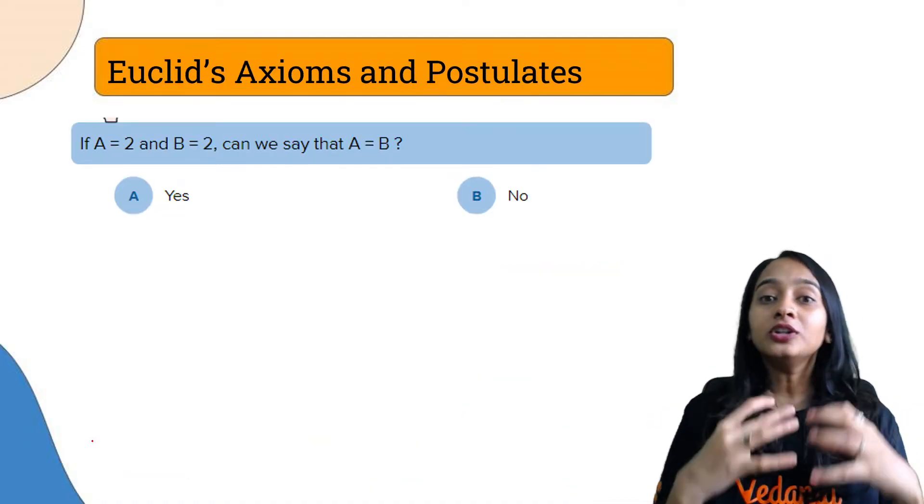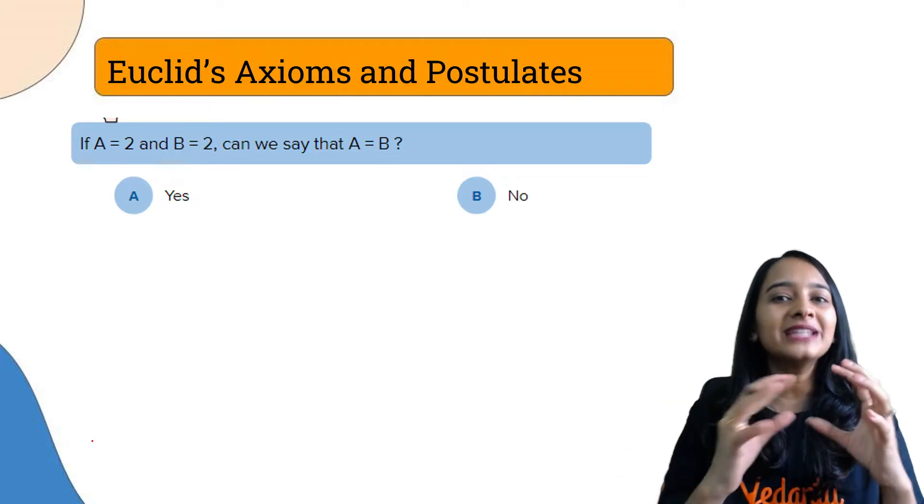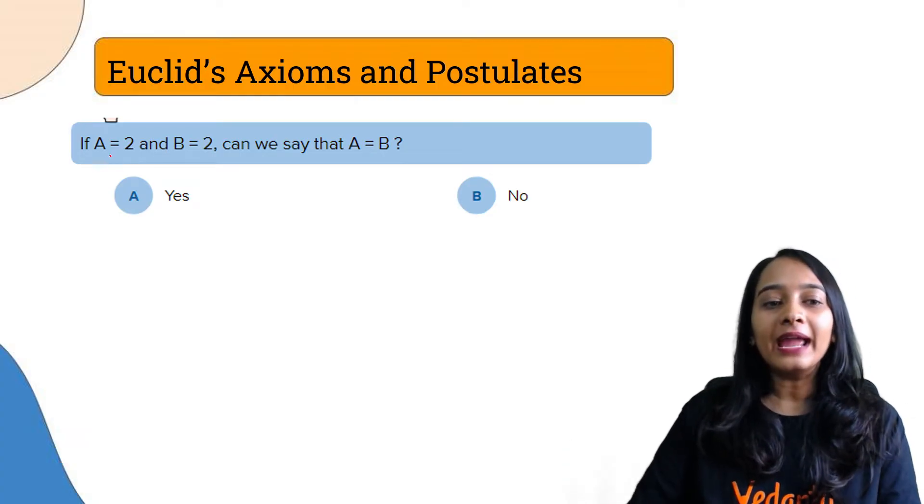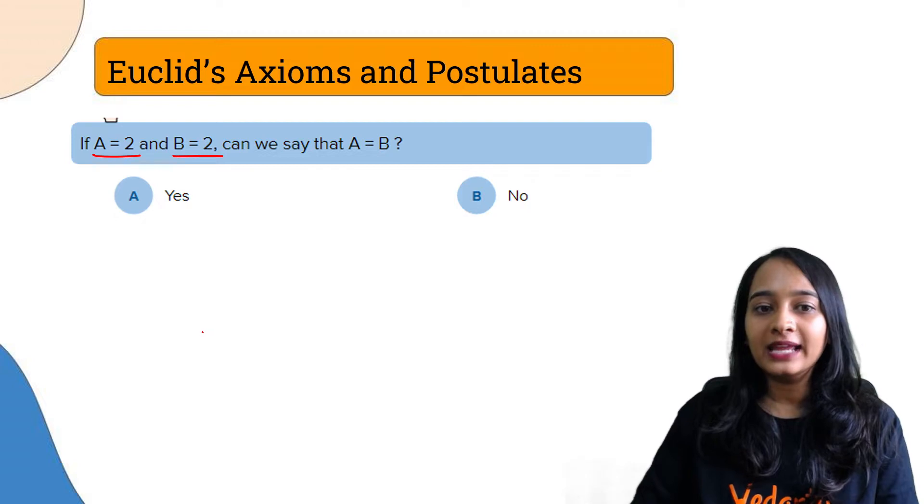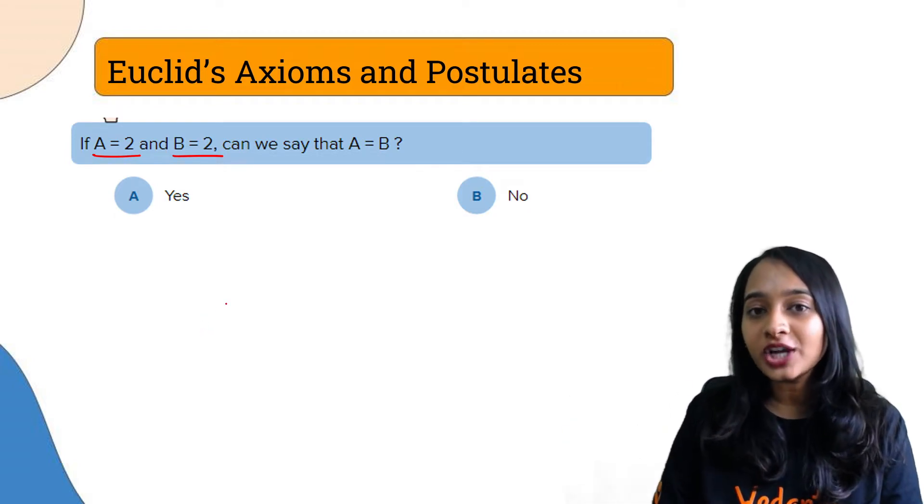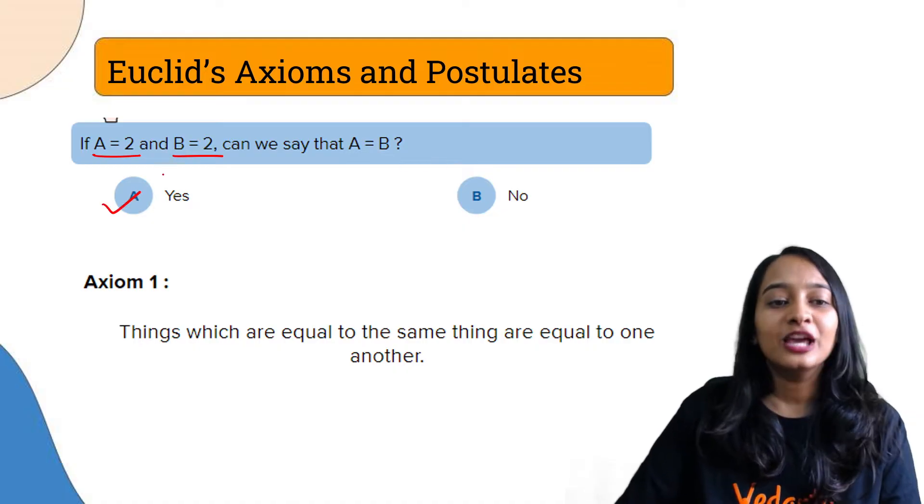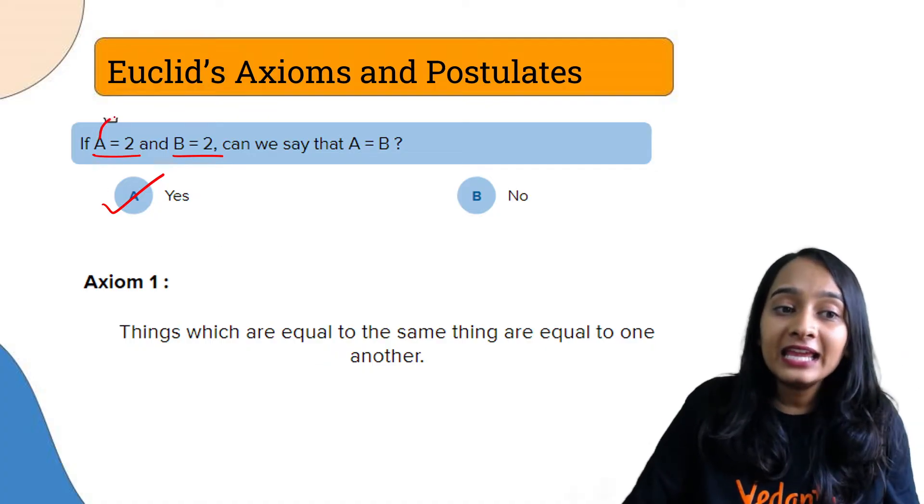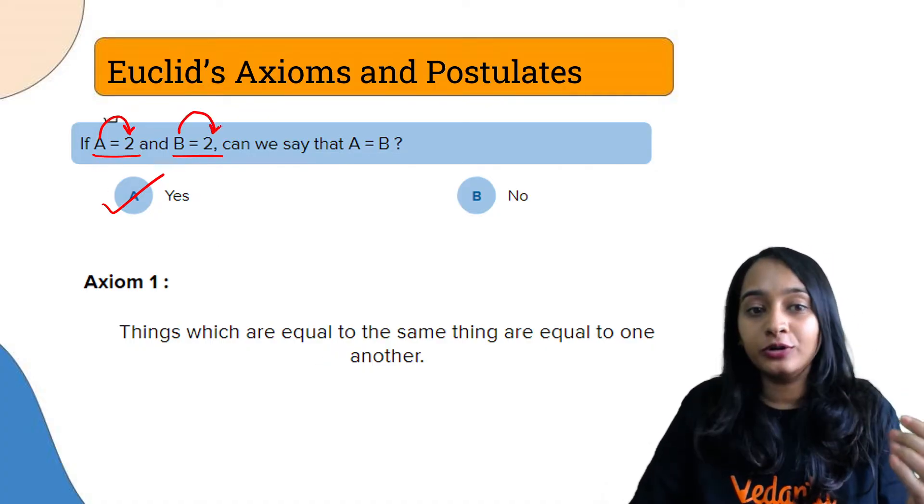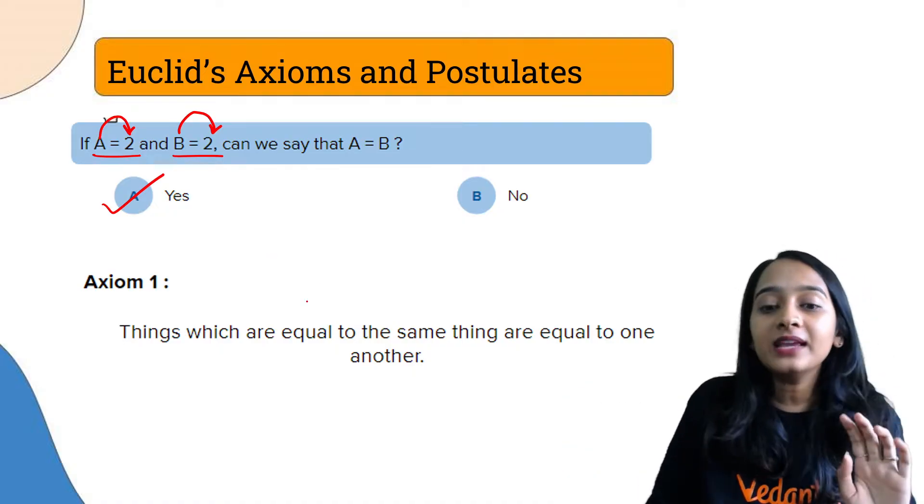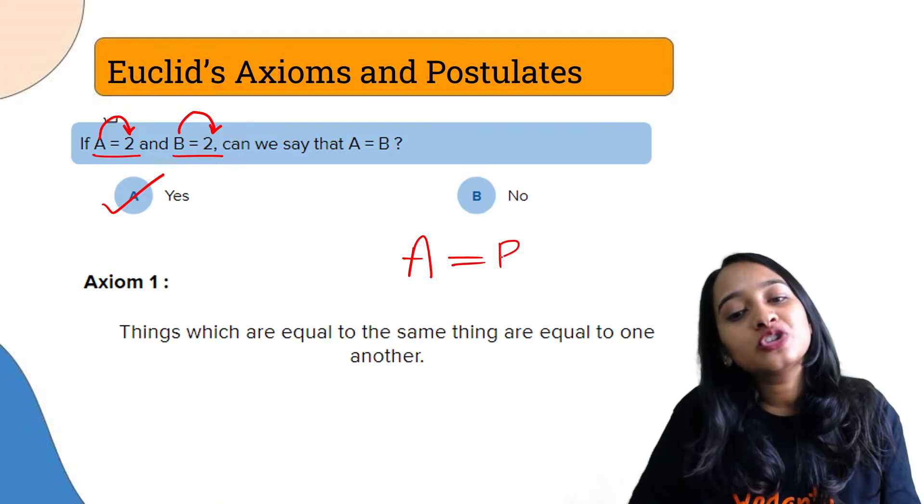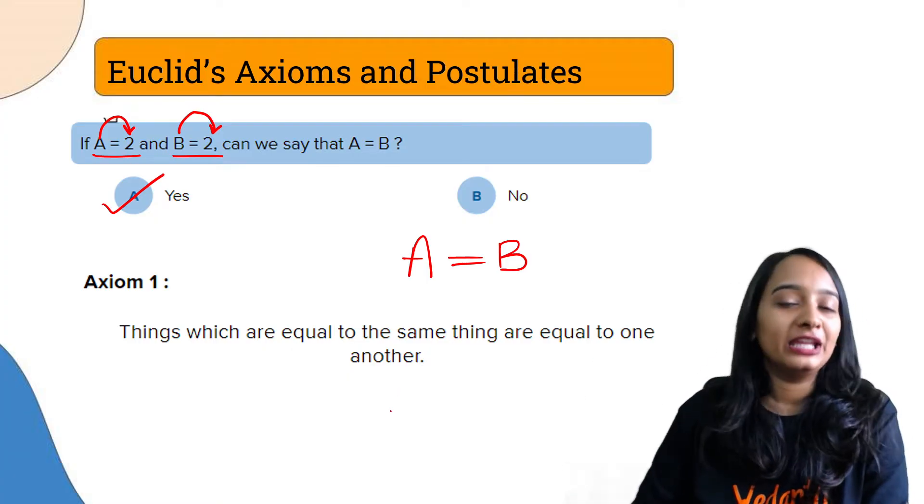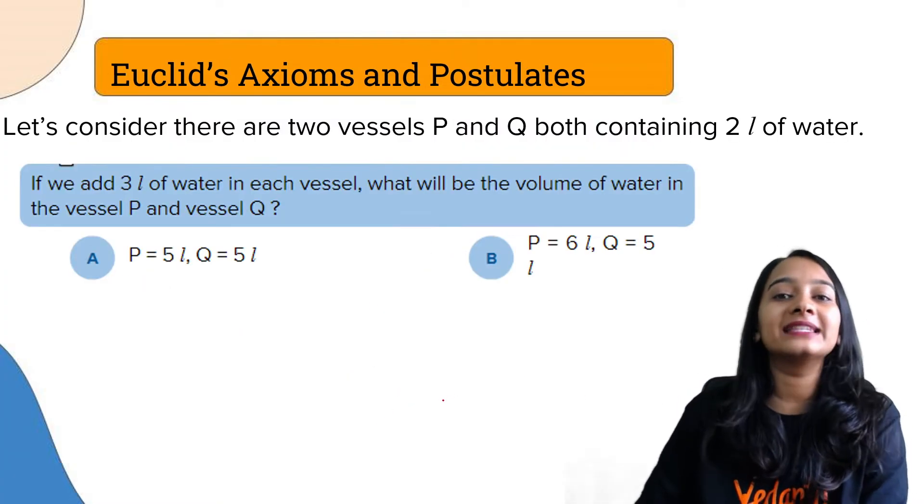Now talking about axioms and postulates. First, let's discuss axioms. We will be talking about each axiom with an example. If A is equal to 2 and B is equal to 2, can I say that A and B are equal to each other? Of course yes. So Axiom 1 states: things which are equal to the same thing are equal to one another. If A equals 2 and B equals 2, then A is also equal to B.